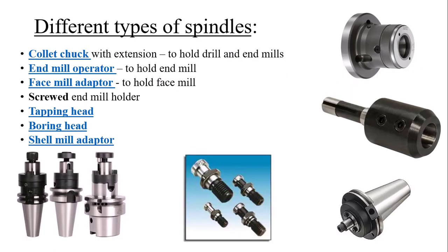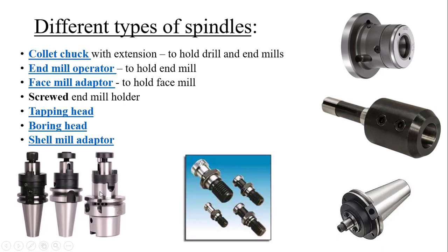The types of spindle tooling holding devices are as follows. The first is the collet chuck, which is common in CNC machines and is defined for each specific diameter — you cannot use it for various diameters. Next is the end mill adapter, also used for a limited diameter. Then the face mill adapter — every tool has an adapter; you just fix the adapter, fit the tool into it, and start working. There is also the screw end mill holder, the tapping head for creating threads, the boring head for enlarging the diameter of a hole, and finally the shell mill adapter.